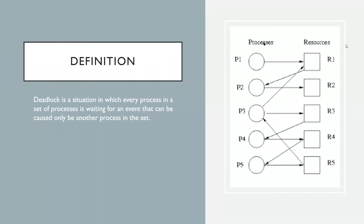Let's see the textbook definition of what a deadlock is. The classic definition is that a deadlock is a situation in which every process in a set of processes is waiting for an event that can be caused by another process in that set.